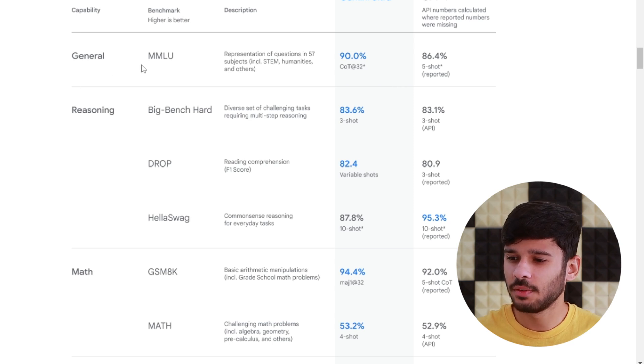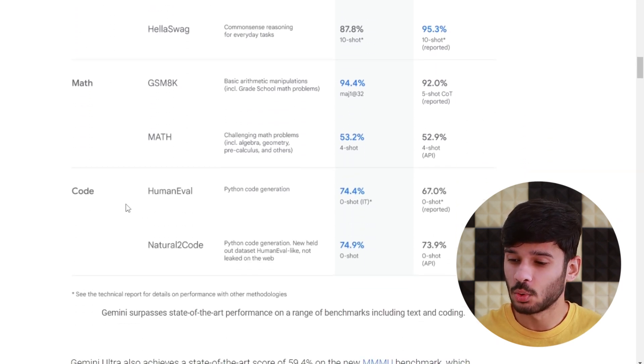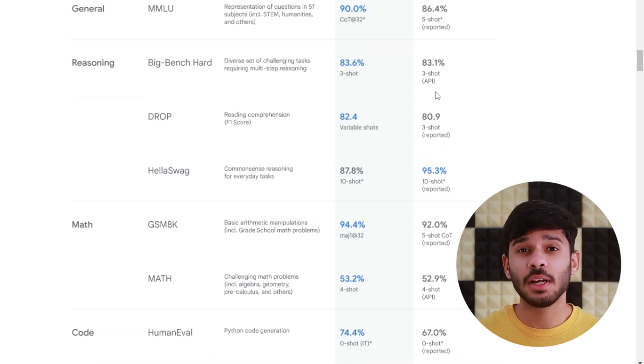Here are the tests in which Gemini Ultra outperformed GPT-4. The first test is the general test in which we have MMLU test. Then we have reasoning, and then we have math, and at last we have code test. So it seems like from the stats that Gemini Ultra outperformed GPT-4, and again this is the model which we will get access to next year.